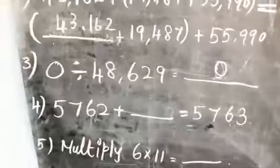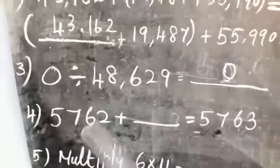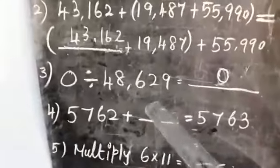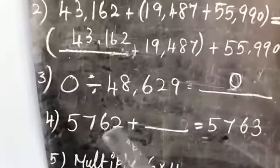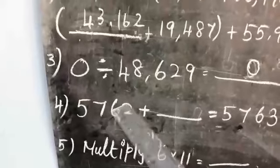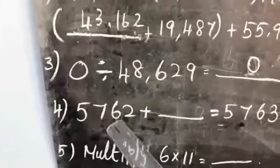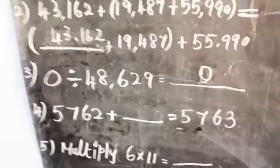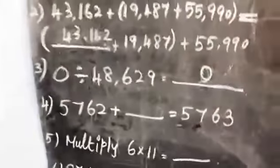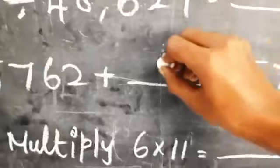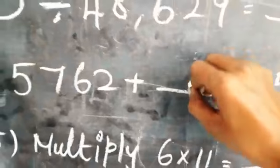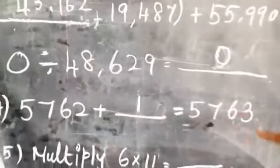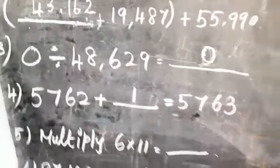Now look at the fourth one: 5,762 + dash = 5,763. The dash is 1, because when we add 1 to any number, the answer comes to just the number right after the given number. So 5,762 + 1 = 5,763.